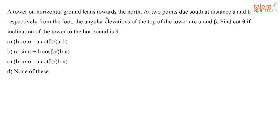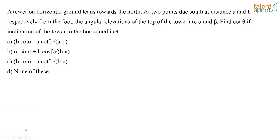A tower on horizontal ground leans towards north. At two points due south, at distances a and b respectively from the foot, the angular elevations of the top of the tower are alpha and beta. Find cot theta if the inclination of the tower to the horizontal is theta. First, you have to draw the figure correctly. The tower is leaning towards the north, so let us assume this is north direction and this is south direction. The tower makes an angle of inclination theta with the ground.